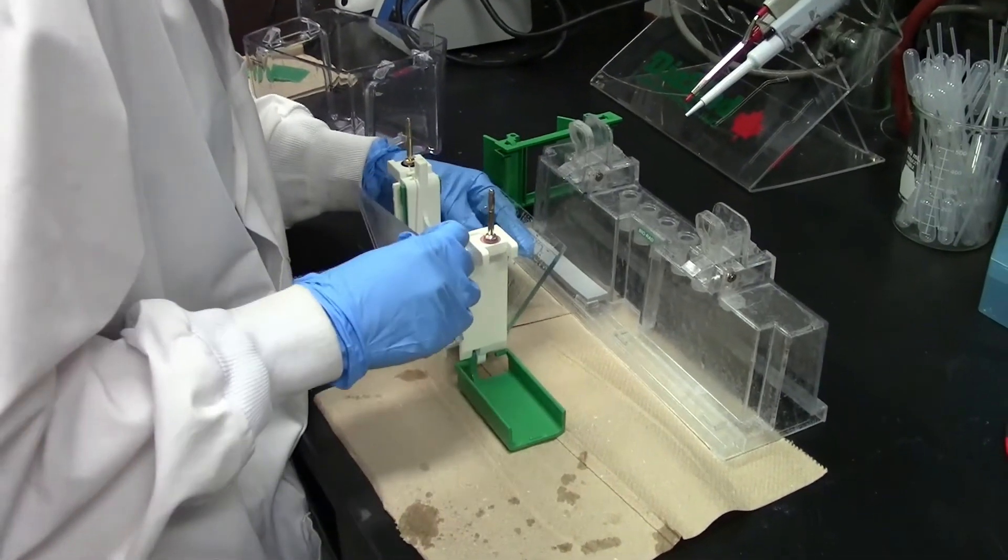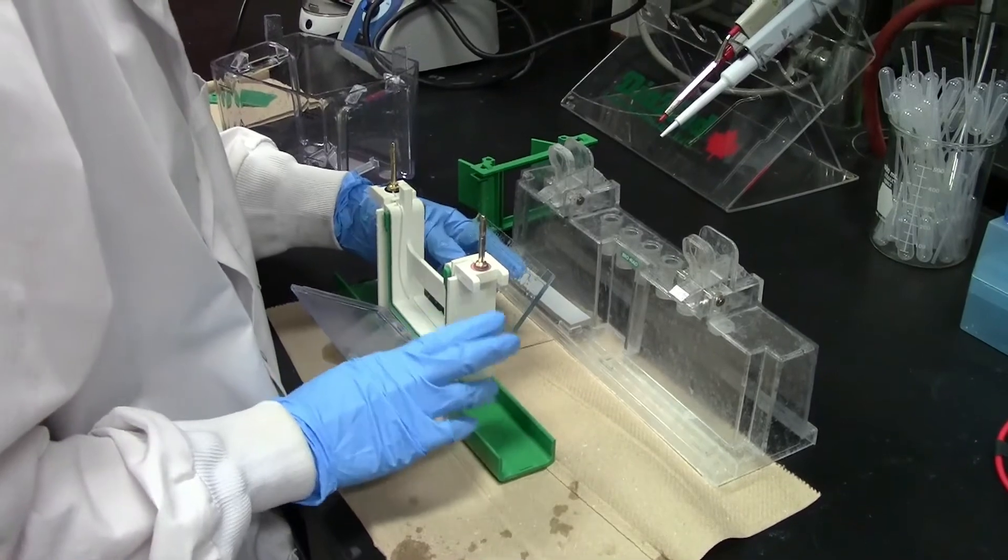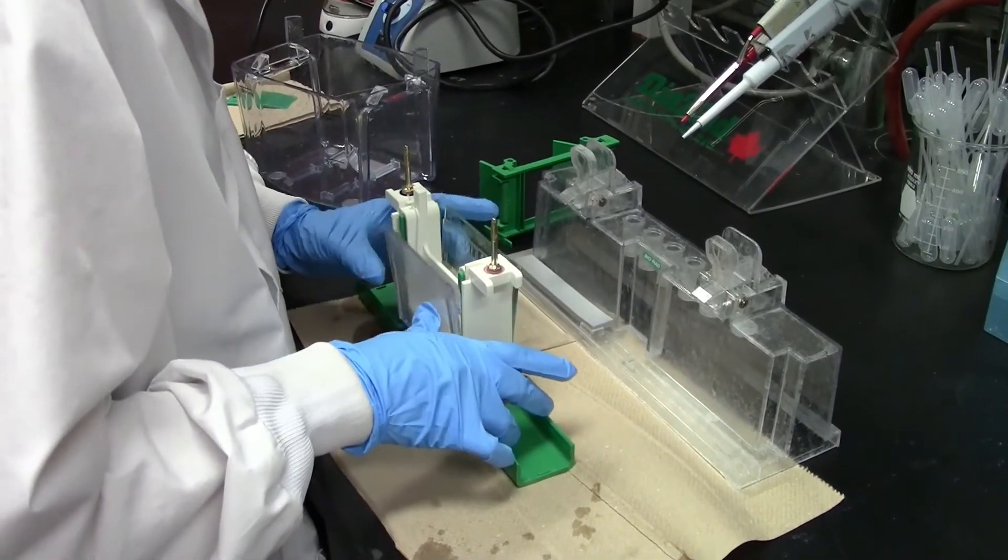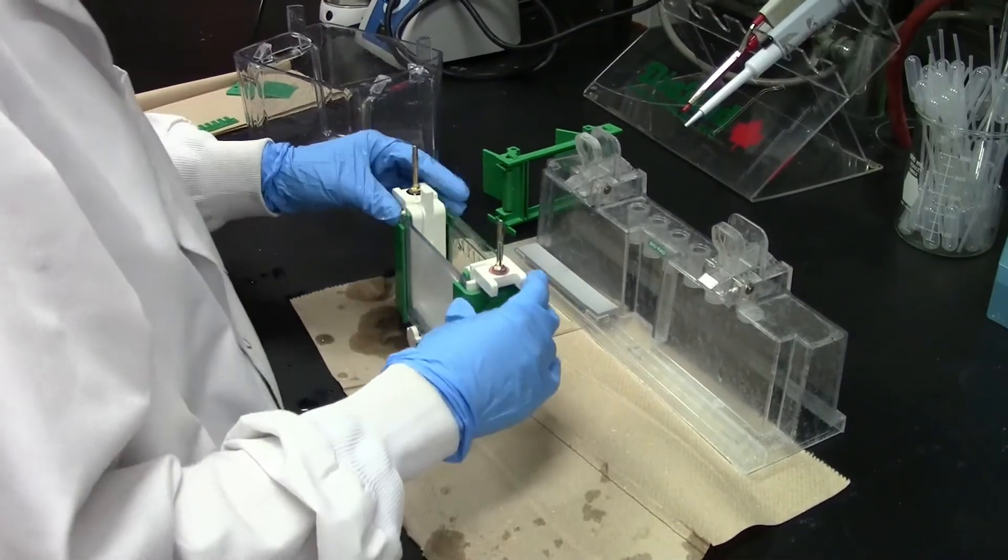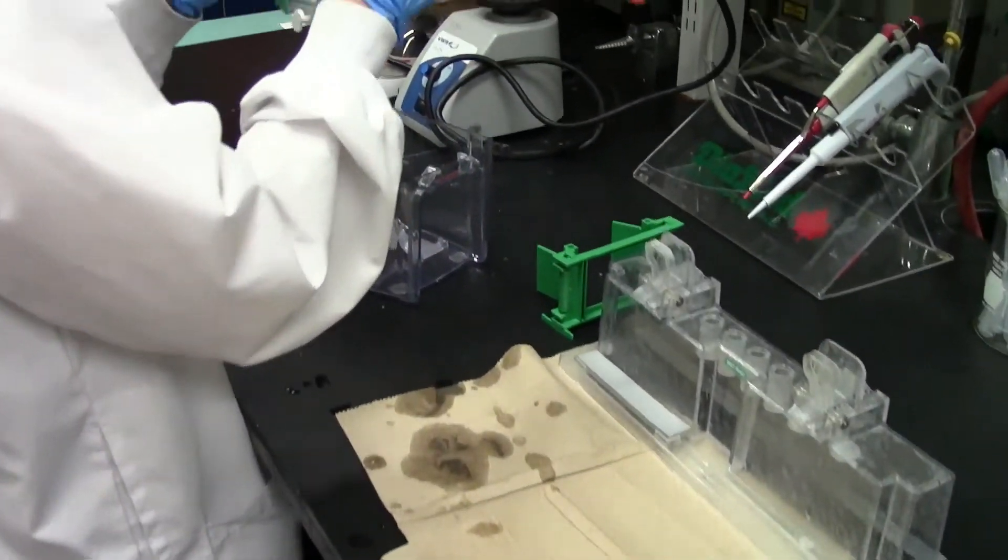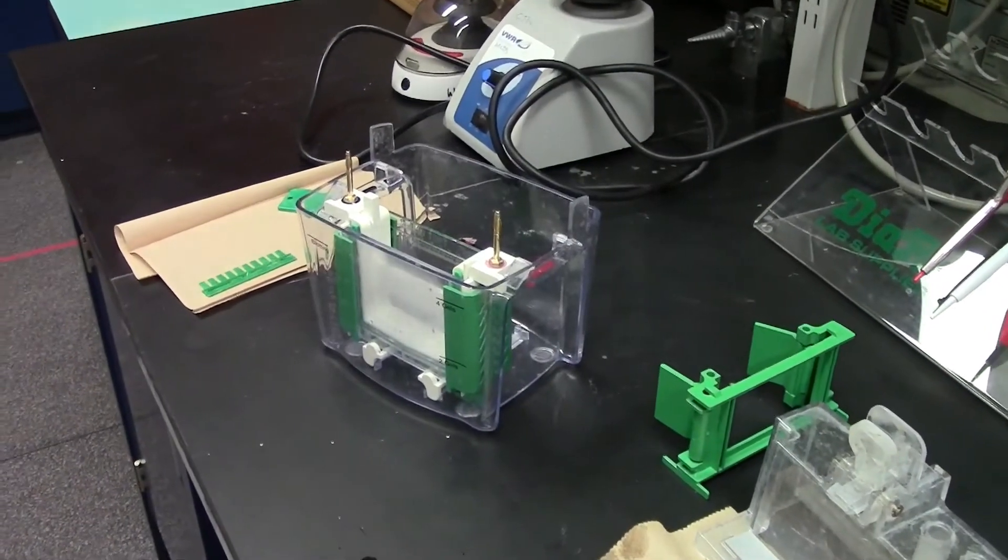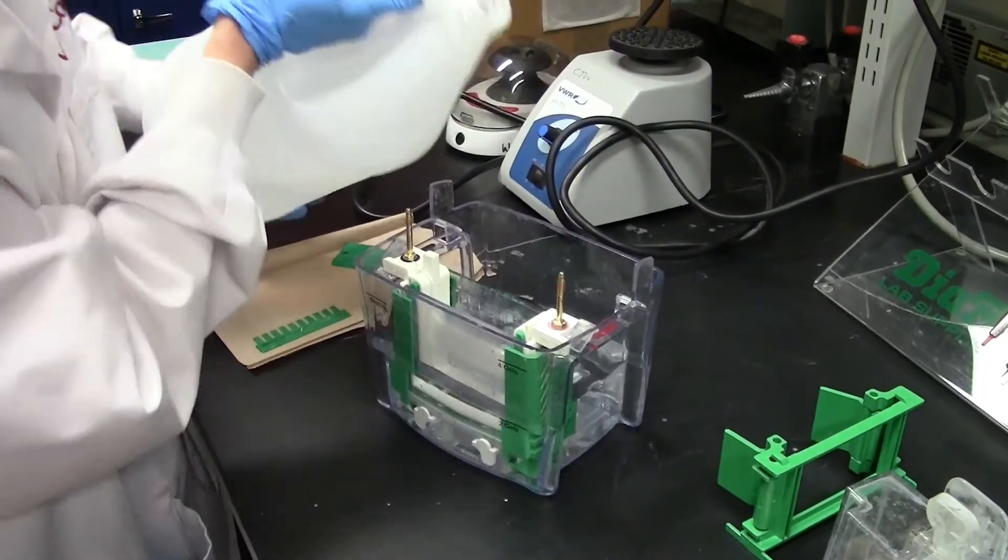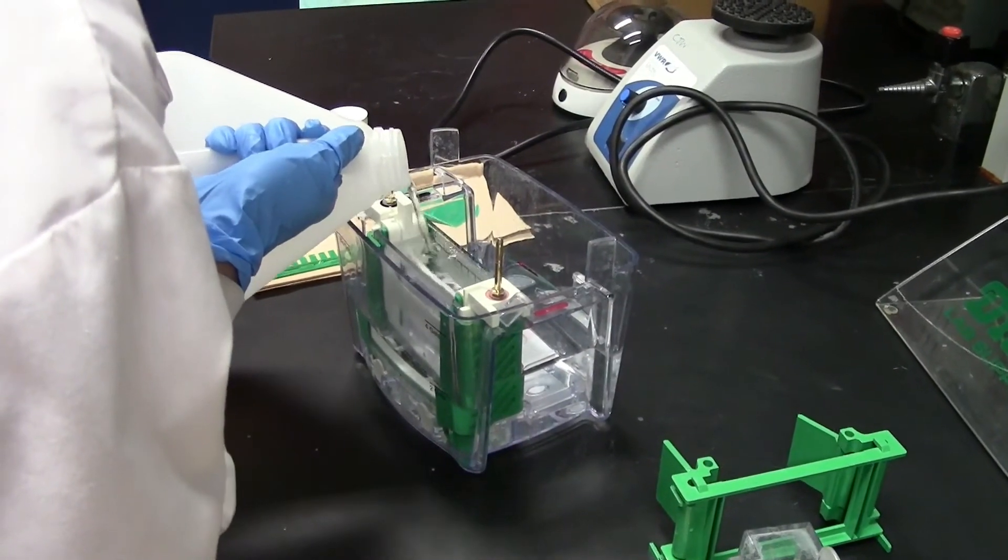For us, we use 1x TBE buffer. You will then need to place your gel in the electrode assembly with the short plate facing the inside, along with a second gel or a buffer dam if you are only running one gel. Place the electrode assembly in the buffer tank and fill the buffer tank with recycled 1x TBE buffer up to the line labeled 2 gels. And lastly, gently fill the space between the plates with fresh 1x TBE buffer.